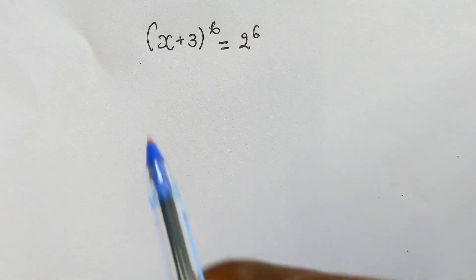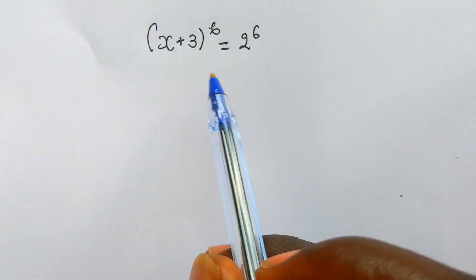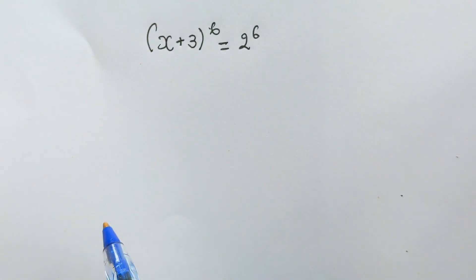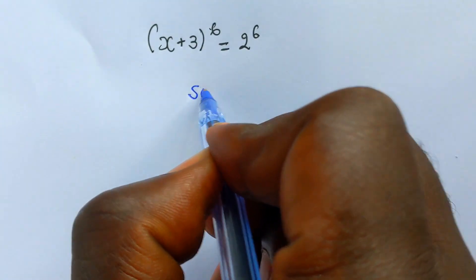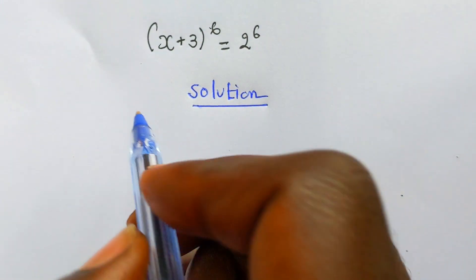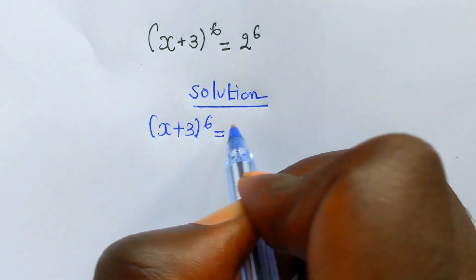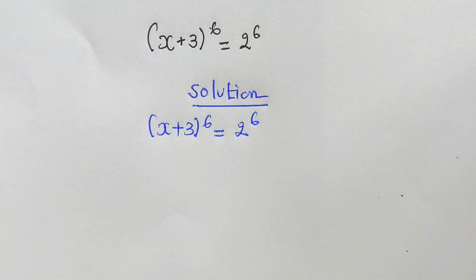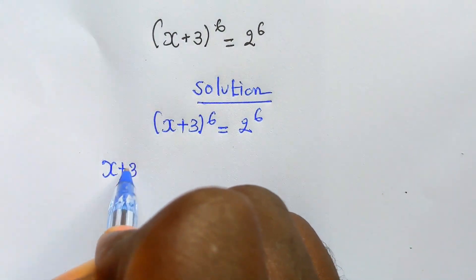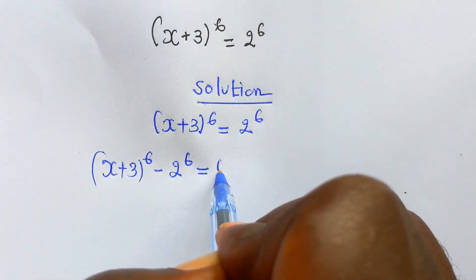We have the equation (x+3)^6 = 2^6, and we need to find six values of x. We rewrite this as (x+3)^6 minus 2^6 equals zero.